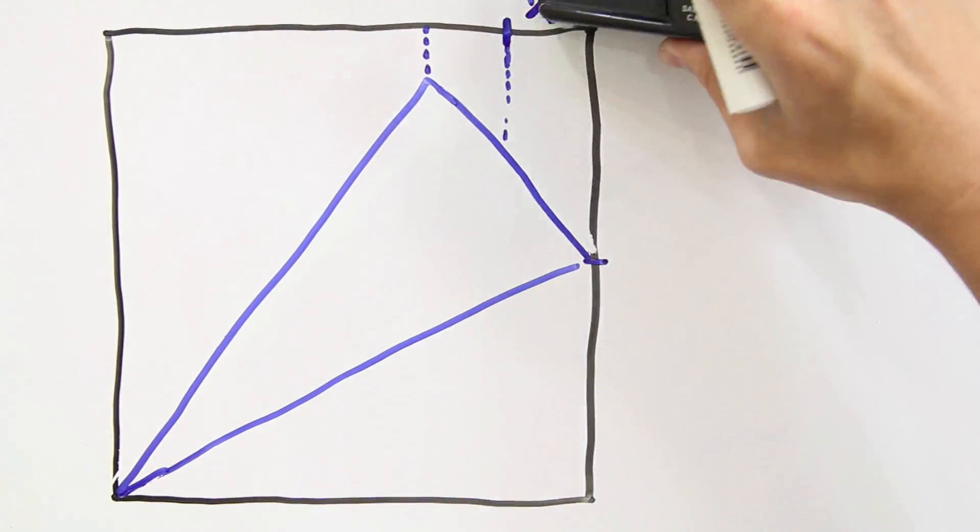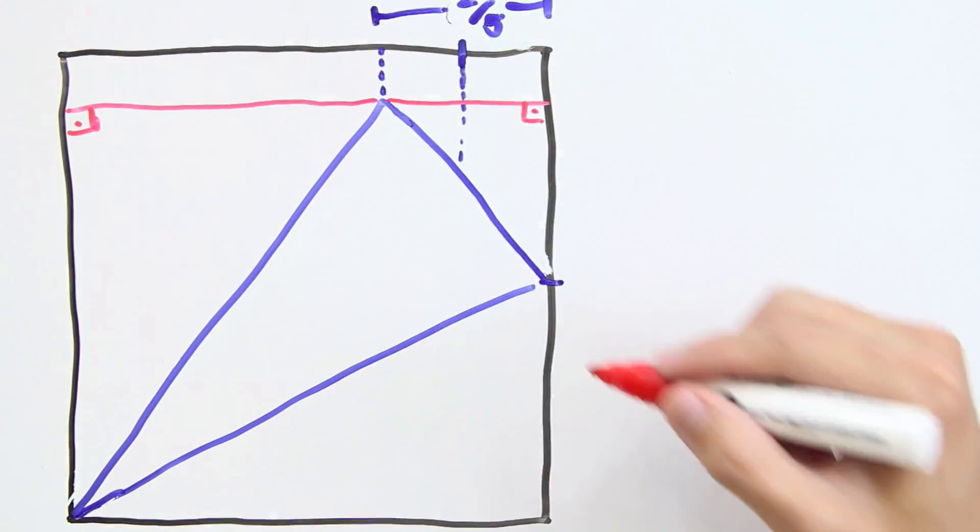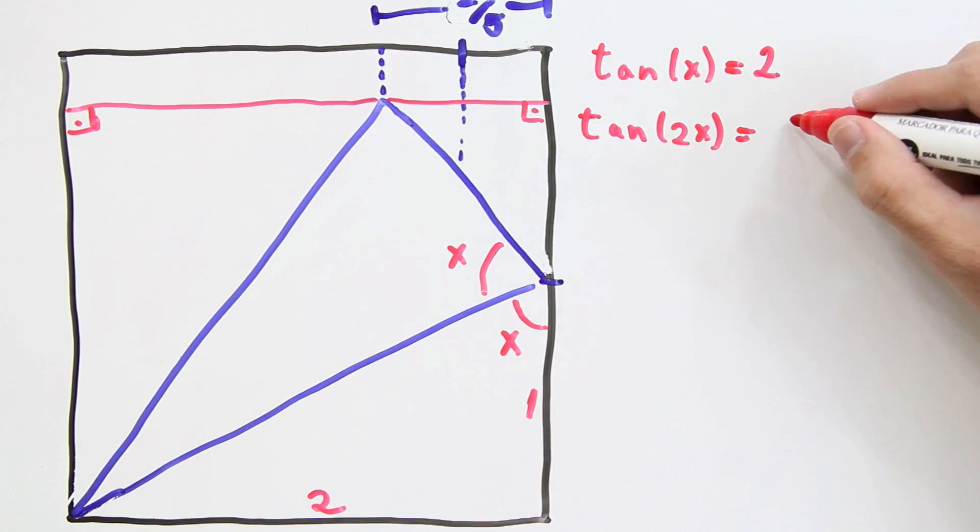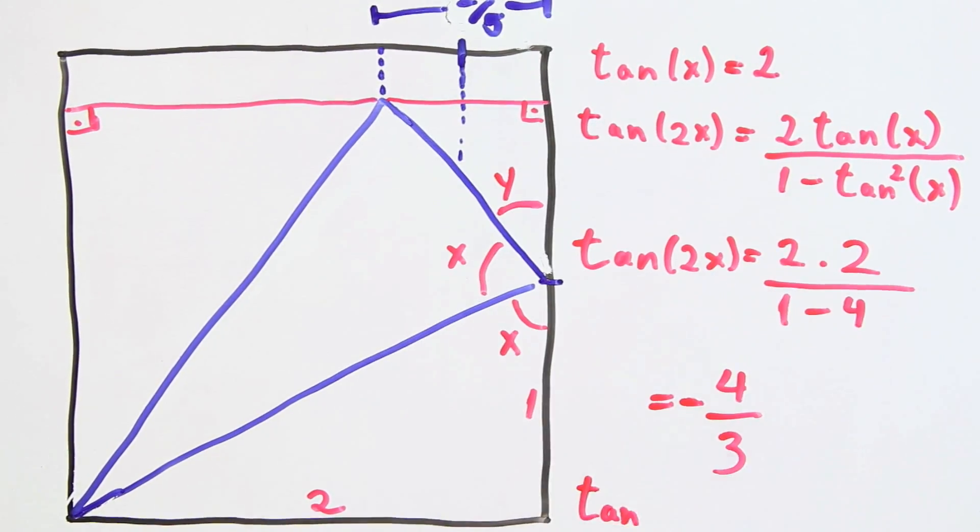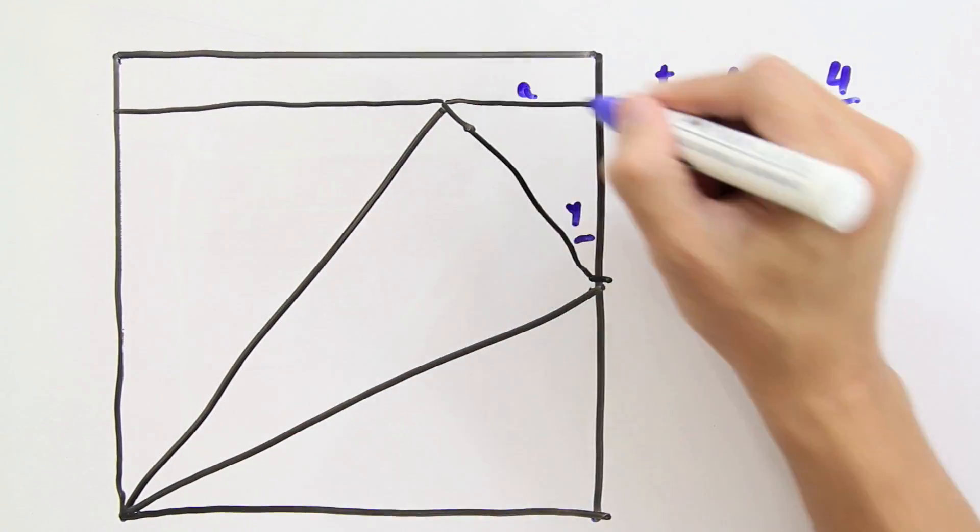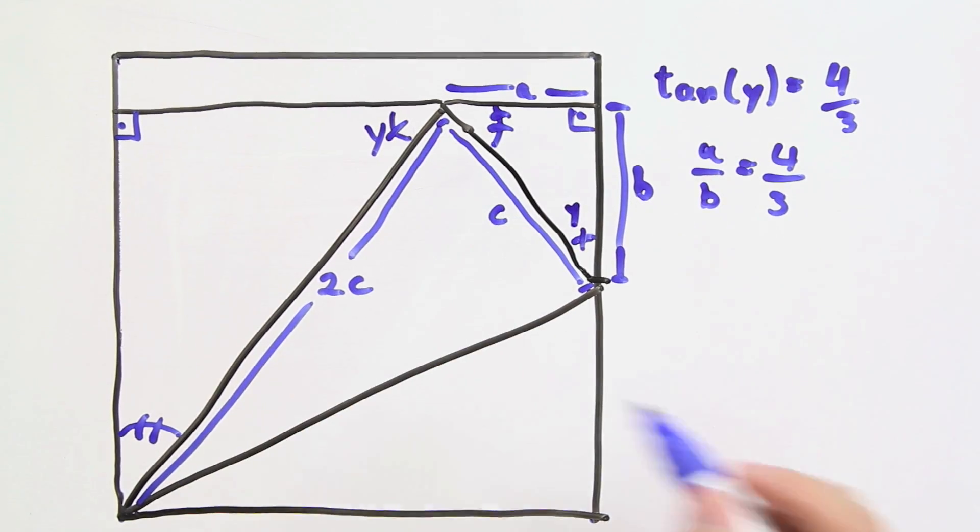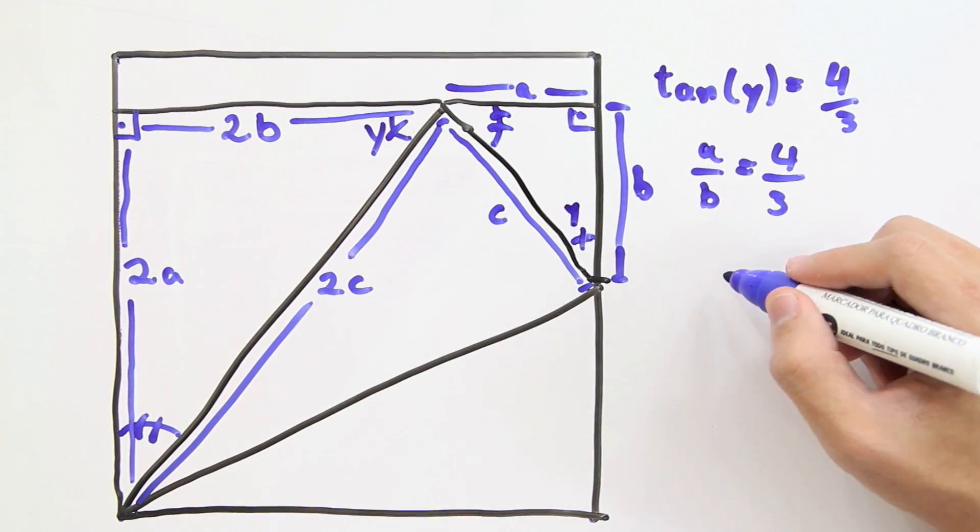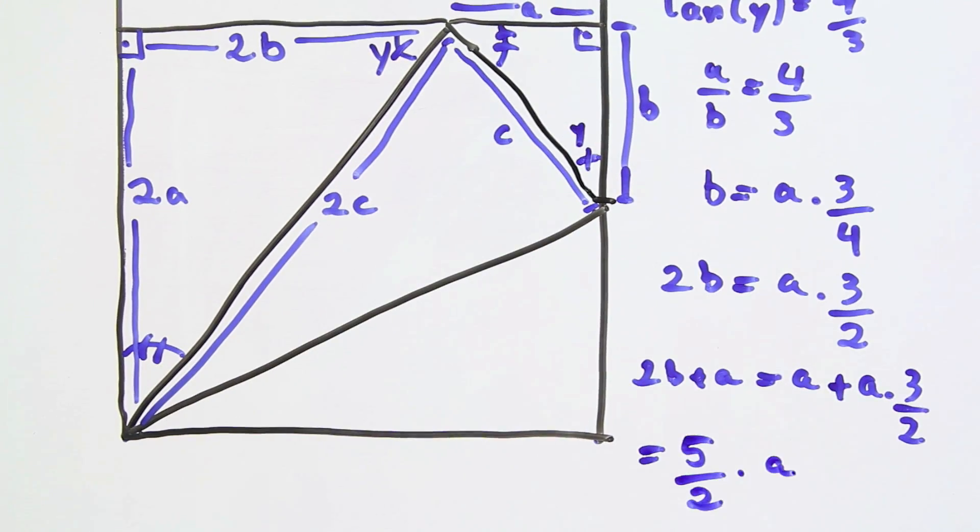For the second technique, I couldn't think of an easier way to explain why it works. So, if you know, please make a video response showing how to do it. The idea of my explanation is to find the tangent of y using some trigonometric identities. And, after you find that the tangent of y is 4 divided by 3, you just apply the fact that these two triangles are similar. So, you find that a equals 2 fifths of the side of the paper.